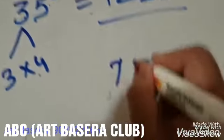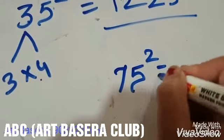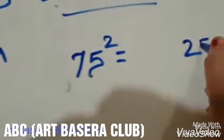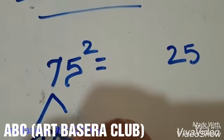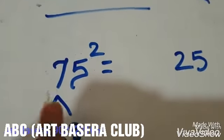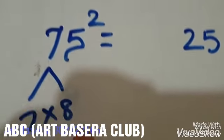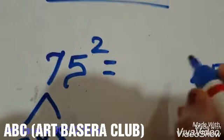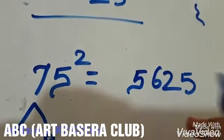One more example. What is the square of 75? We will just write 25 here and what is 7 into 8? The number that comes just after 7 is 8. That's why 7 into 8 is 56. So the square of 75 is 5625.